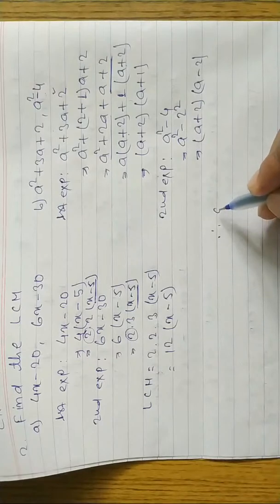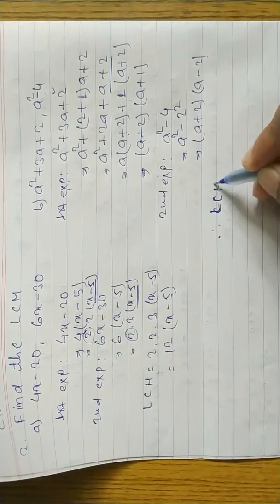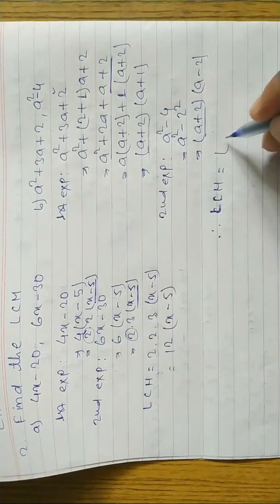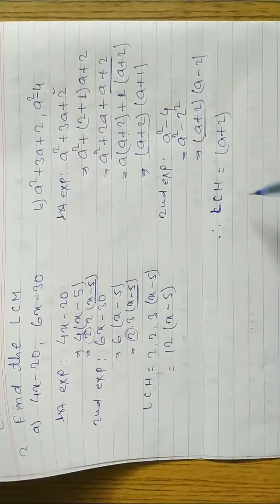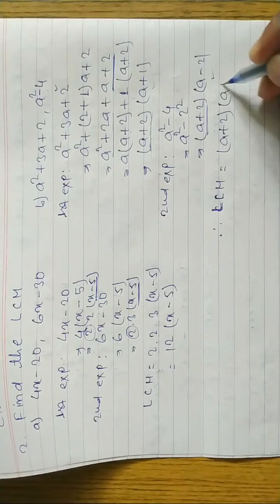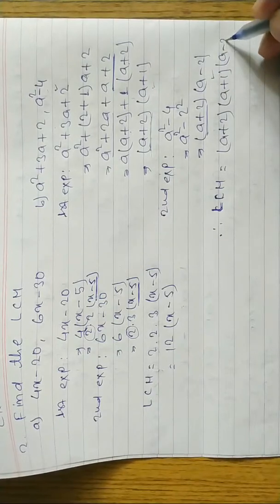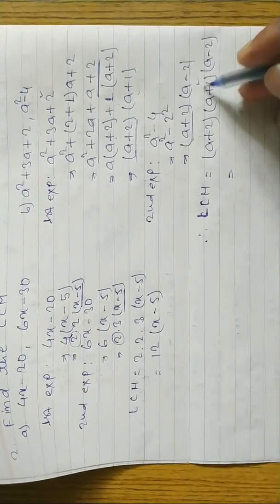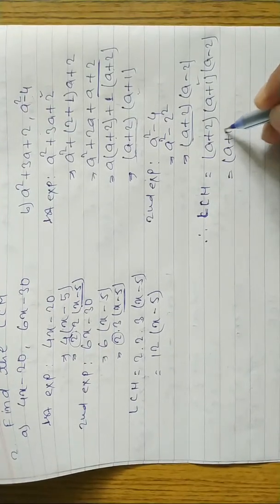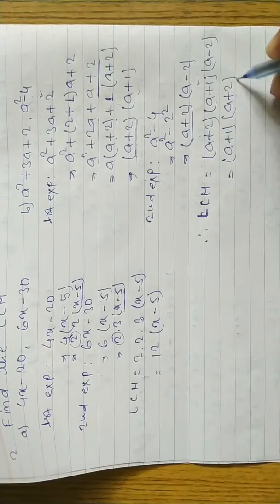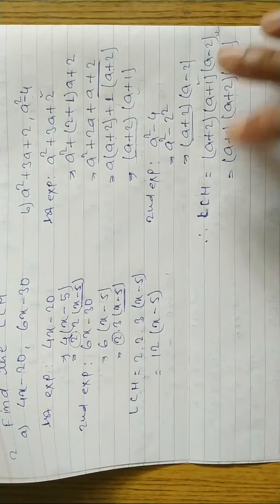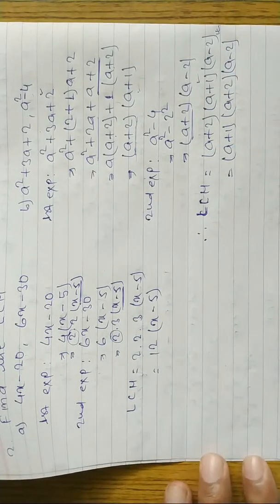Now we find the LCM. The common factor in both factorized expressions is (a + 2), so we write (a + 2) as common. The remaining factors are (a + 1) and (a - 2). So the LCM is (a + 2)(a + 1)(a - 2). You can also write it as (a + 1)(a + 2)(a - 2) and you will still get full marks. Hope you understand question 2b.